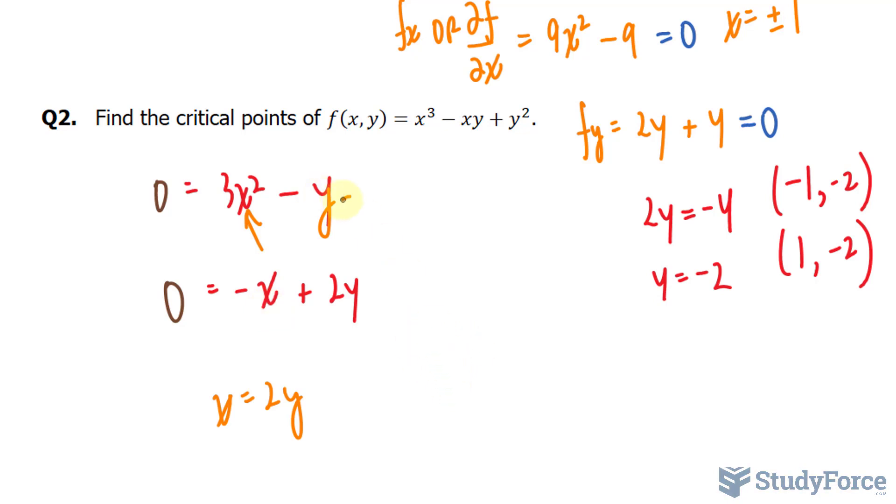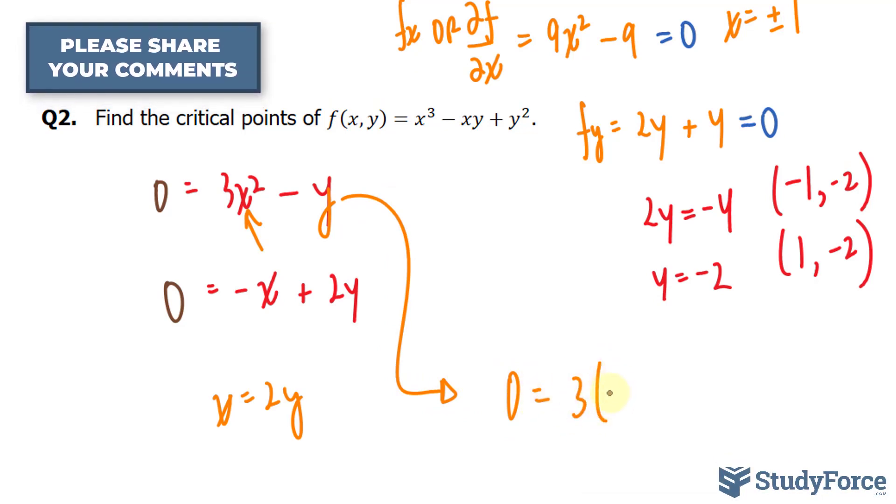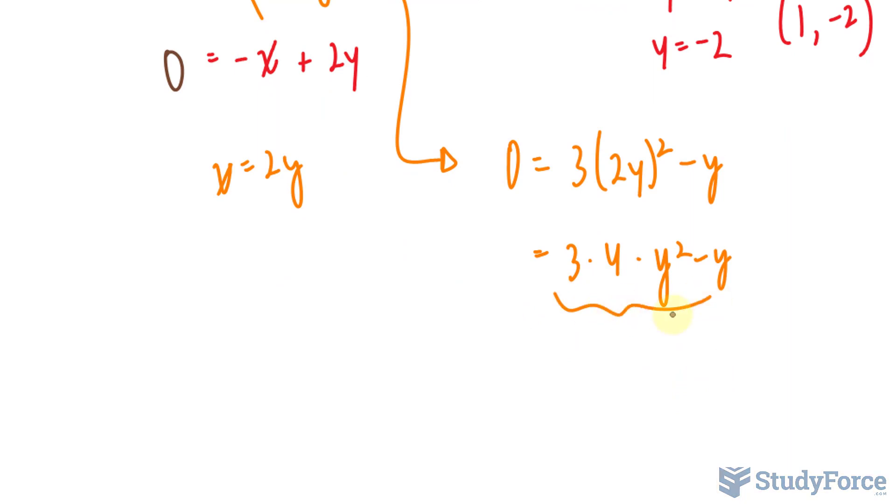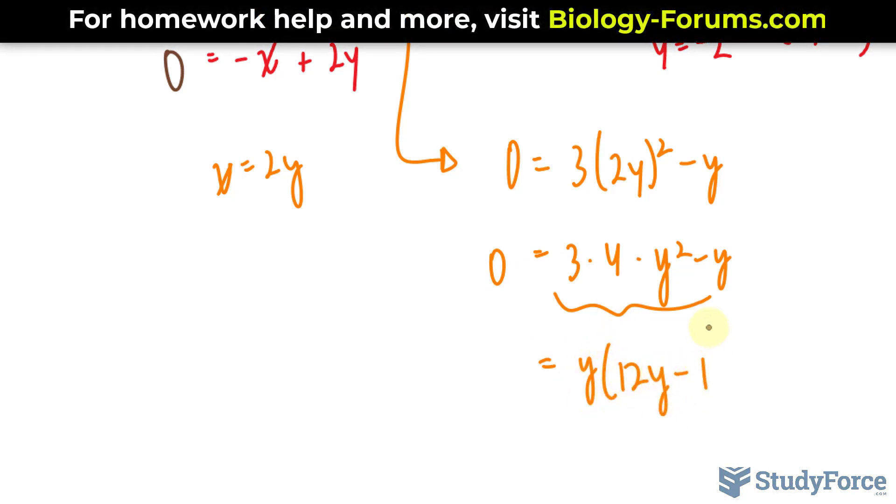That will give us an equation that's exclusively in terms of y. So we have, manipulating this, 0 is equal to 3 bracket 2y to the power of 2 minus y. Distributing this exponent to these two factors, we get 3 times 4 times y squared minus y. This is an incomplete quadratic, which you can easily solve by factoring. So we have y bracket 12y minus 1.